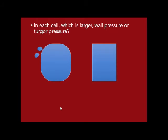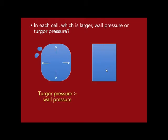In each cell, we can ask which is larger — wall pressure or turgor pressure. When the cell looks like it's about to explode, the turgor pressure is probably bigger. When the cell looks deflated or compressed, the wall pressure is winning. Water is going to want to move from high pressure potential to low pressure potential.